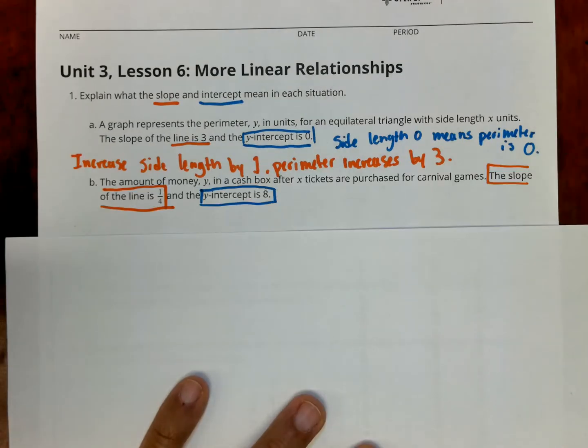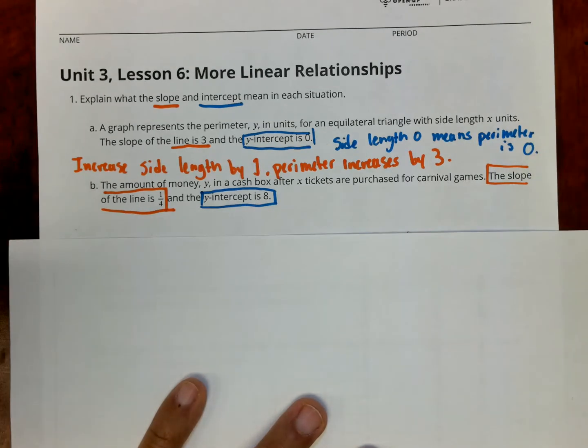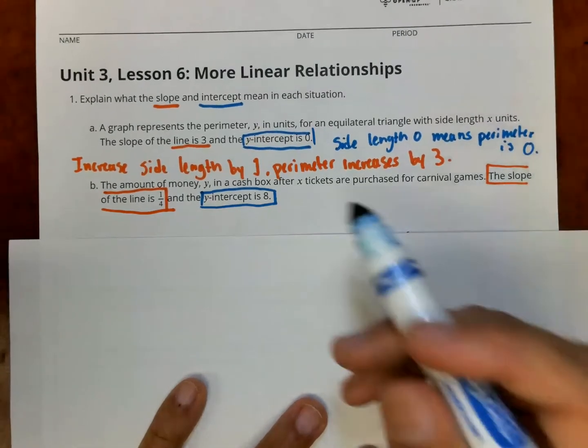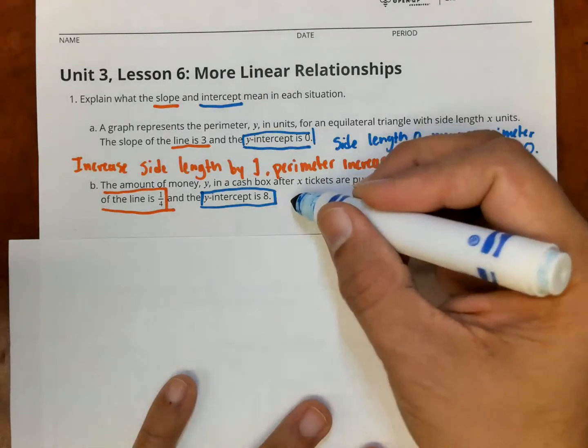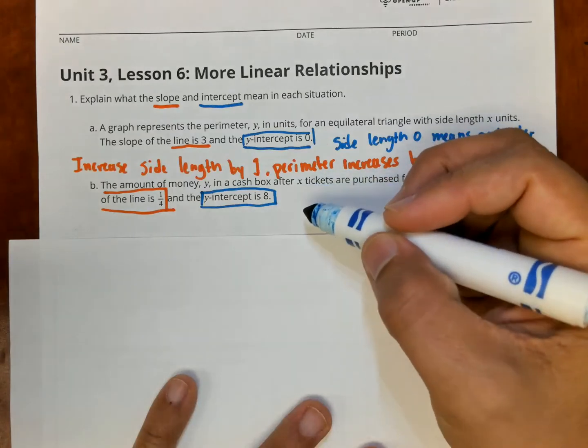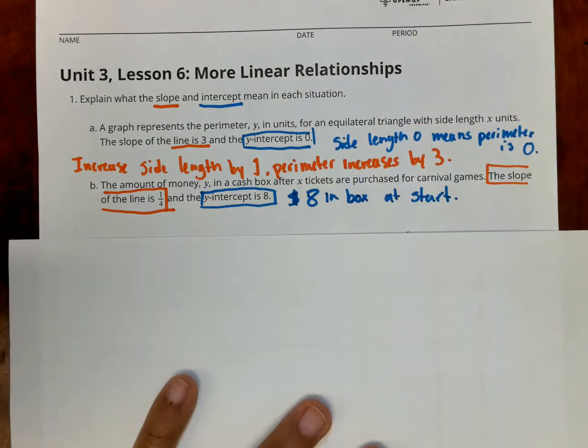Now we're going to go on to part B, the amount of money y in a cash box after x tickets are purchased for carnival games. The slope of the line is 1/4. The y-intercept is 8. So now here we're going to do this one thinking about the y-intercept. You have a cash box. If the y-intercept is 8, that means the box before they sold any tickets had money in it. How much money did it have? It had $8. So the box had $8 to start.